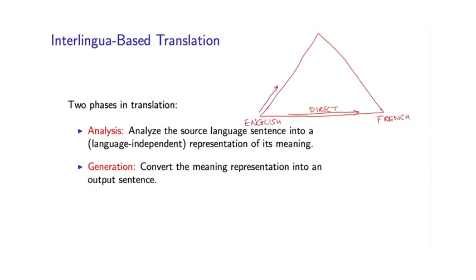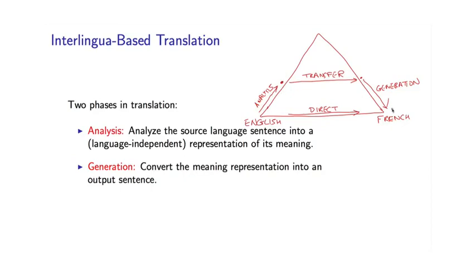In transfer-based systems, we do some analysis, so schematically we get to some point a little bit further up the pyramid. Then we have a transfer stage — so this is the English parse tree, for example, and this is the French parse tree. And then finally we have a generation stage. The intuition behind the pyramid is that if you do a bit of analysis, you have less far to go in the transfer stage — you've made your transfer problem a lot easier than in the purely direct case.